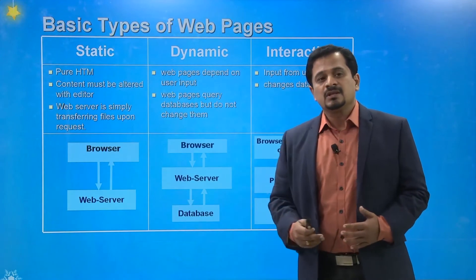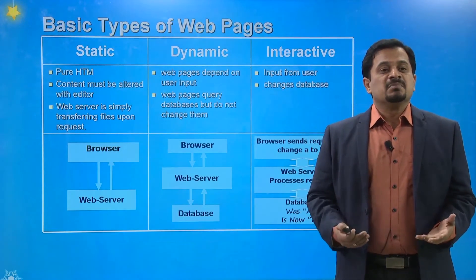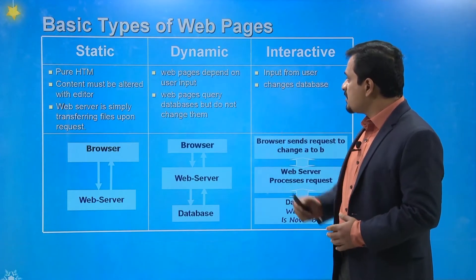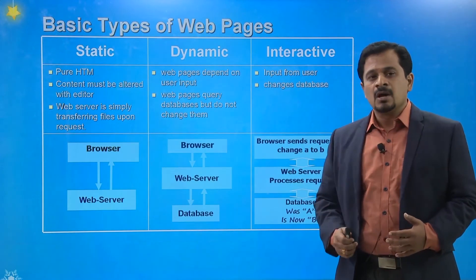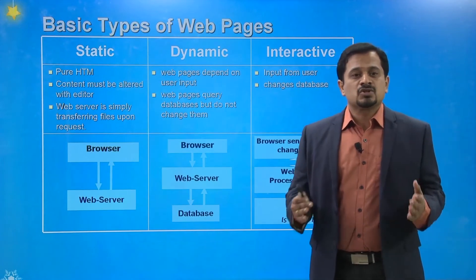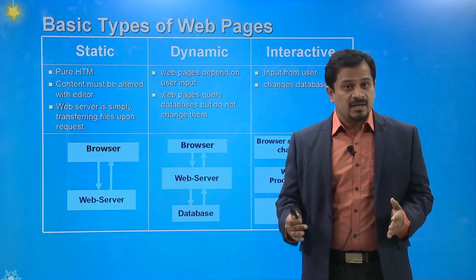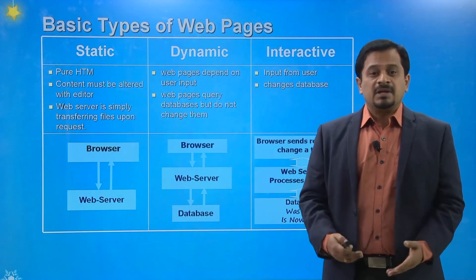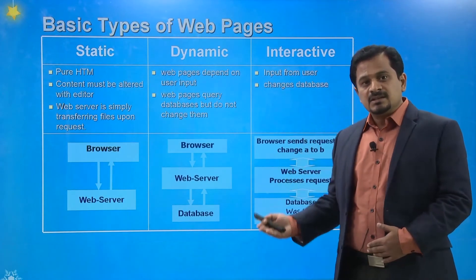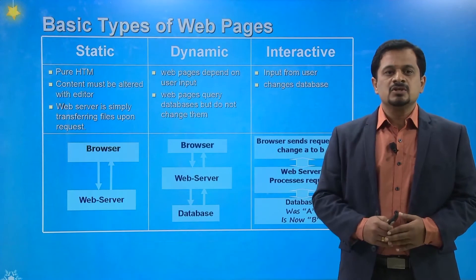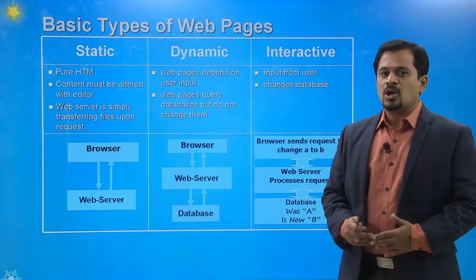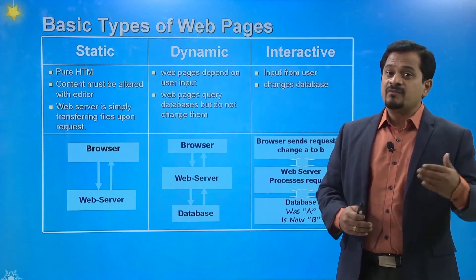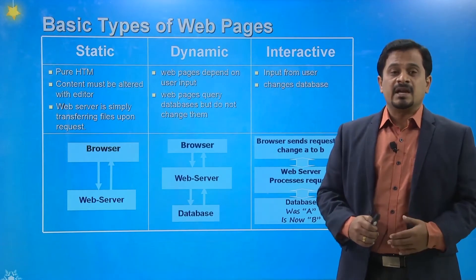Whenever the user wants to get information, they can simply transfer the files on request. Dynamic web pages use a strong database. Whenever the user wants any particular services, they can request the services to the e-government, and then automatically the browser will provide information based on the query fetched from the databases.